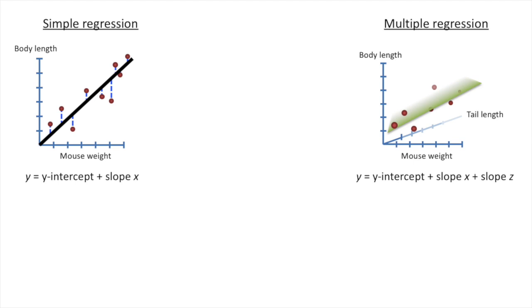In the previous example, all that meant was that instead of just modeling body length by mouse weight, we modeled body length using mouse weight and tail length. If we added additional factors, like the amount of food eaten or the amount of time spent running on a wheel, well, those would be considered additional dimensions, but they're really just additional pieces of data that we can add to our fancy equation.